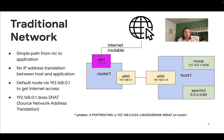Host 1 has internet access through a router that's outside of host 1, which does network address translation — more specifically, source network address translation — such that host 1 can have internet access without needing an internet-routable IP address on the host itself.